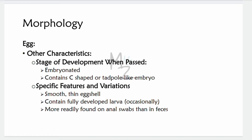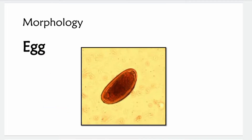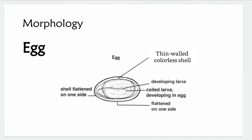Other characteristics: the egg is passed out of the human body in the embryonated stage, containing a C-shaped or tadpole-like embryo. Specific features: the egg has a thin and smooth eggshell and contains fully developed larvae occasionally. It is more readily found on anal swabs than in feces. As you can see in the diagram, one side is flattened, the other is convex, with a thin-walled colorless shell and a coiled developing larva inside. The five membranes discussed are not visible in this diagram.